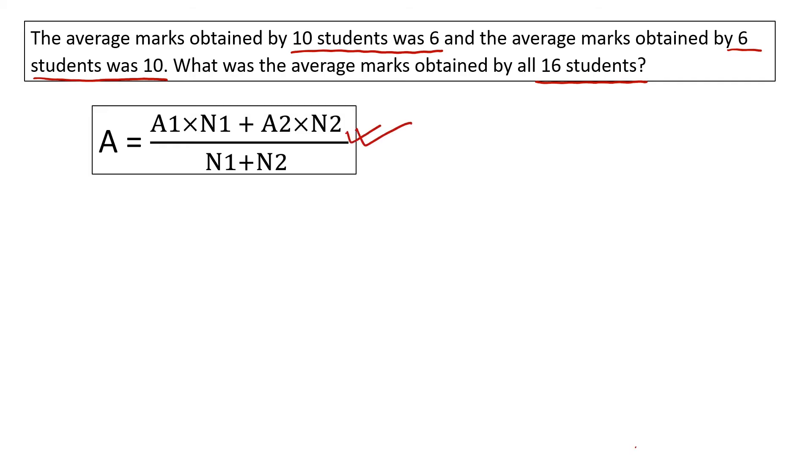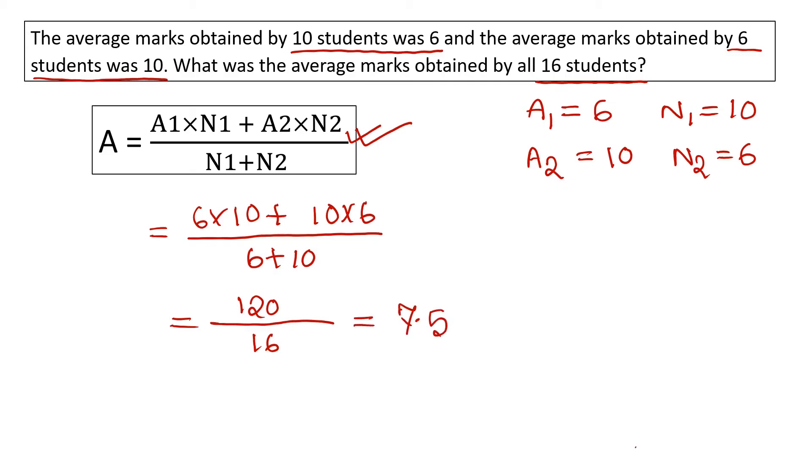The formula is A equals A1 times N1 plus A2 times N2 divided by N1 plus N2. This is 6 times 10 plus 10 times 6 divided by 6 plus 10 equals 120 by 16. This is 7.5. So the average marks obtained by all 16 students is 7.5.